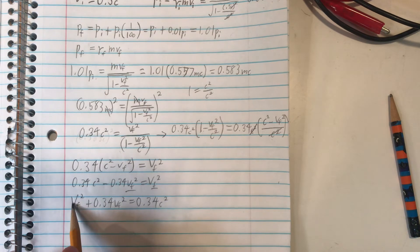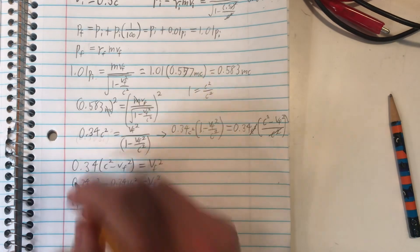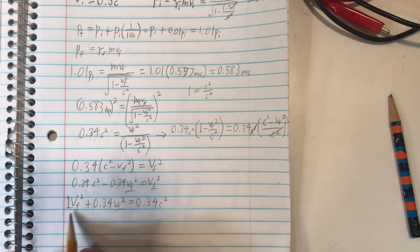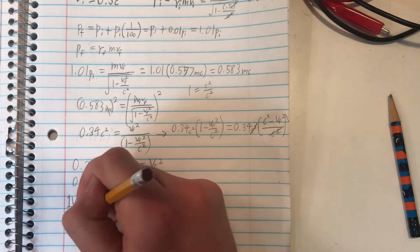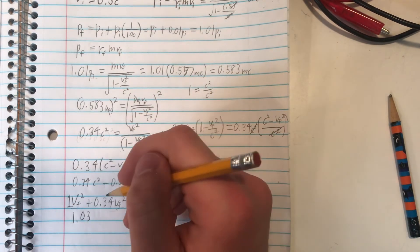And now, since we have the same variable here in both of these terms, they add together. So the coefficients would add together, which in this case would be a 1, meaning that our left side simplifies down to 1.34 times vf squared.